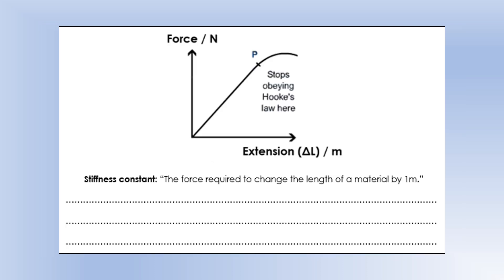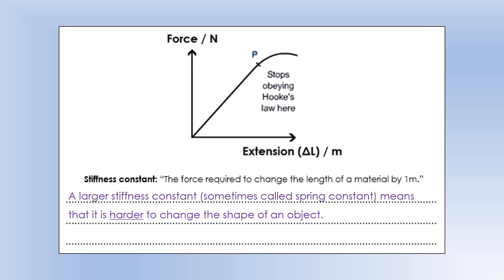We know we've hit the limit of proportionality - where Hooke's Law stops working - when the force versus extension graph stops being a straight line. Looking at the graph of force against extension, we can see that for quite a range of forces it is a directly proportional relationship, but towards the top it stops being directly proportional. The gradient of the straight line section is what we call the stiffness constant, or spring constant, of the material.